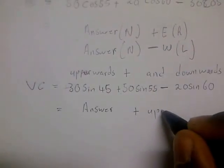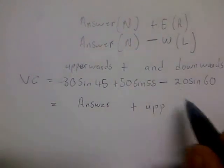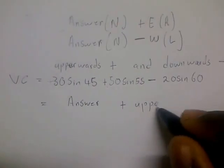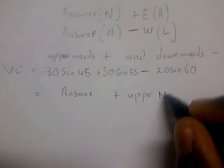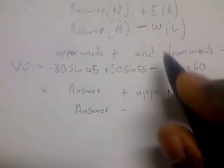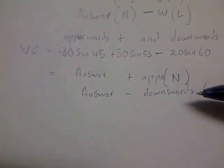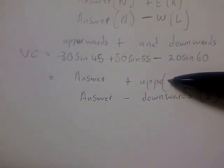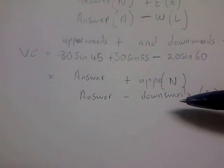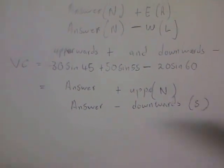If you find your vertical component as positive, that means your forces are going upwards, in the direction of north. If your answer is negative, that means your vertical component is going downwards, in the direction of south. So: if your vertical component is positive the direction is north, and if your vertical component is negative the direction is south.